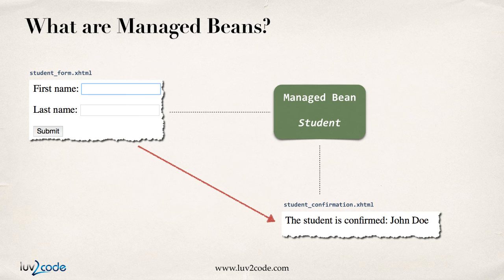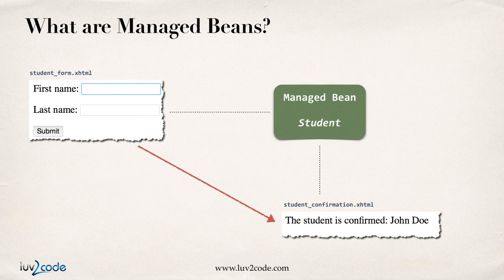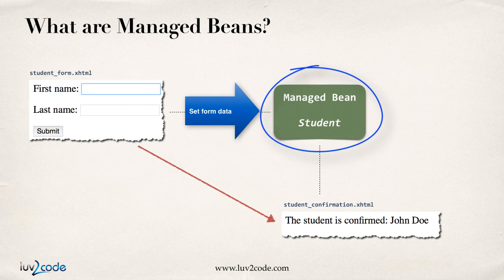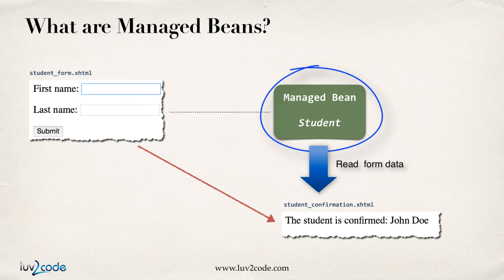This diagram here is a very good layout of how you can use Managed Beans in a JSF application. Notice in the top left, we have the student form.xhtml. This is where the user will actually enter their form data. They'll hit the submit button. Behind the scenes, JSF will actually set data on a Managed Bean. Then it goes over to the student confirmation.xhtml, and this page can actually access and read data from that Managed Bean — basically reading the form data submitted on the previous page, including the student's first name and last name, and give a confirmation page.